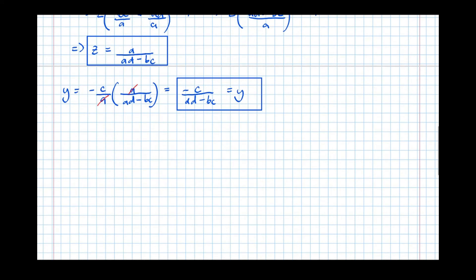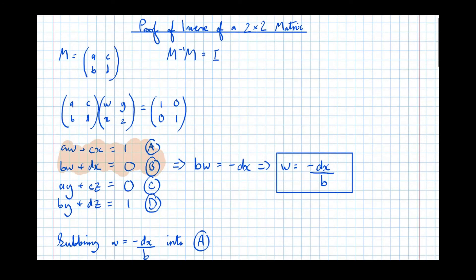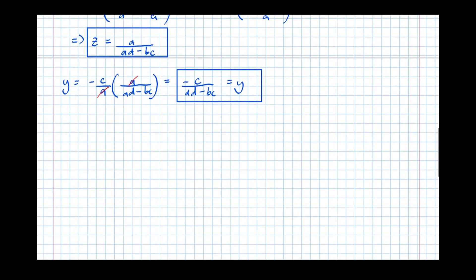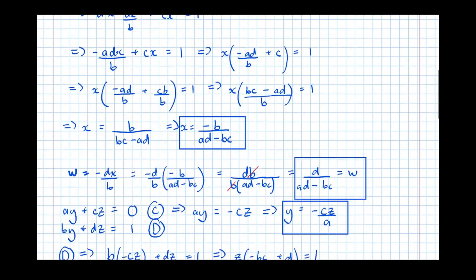Right, so we've got our matrix M, which we defined earlier, if we go right back to the start, as being A, B, C, D. So M was A, B, C, D. And our matrix inverse M, which was W, X, Y, Z.